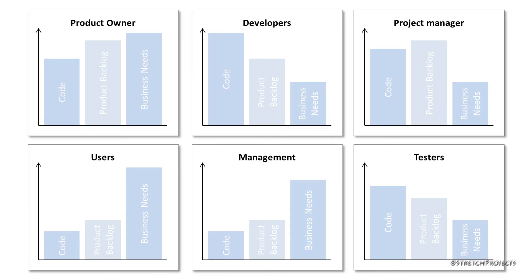The scripts used for user acceptance testing are the product owner's responsibility to create. The product owner has access to the product backlog and knows what the system was developed for. Because they are the ones who have been responsible for saying what the developers should be doing, it's them who know the system best.